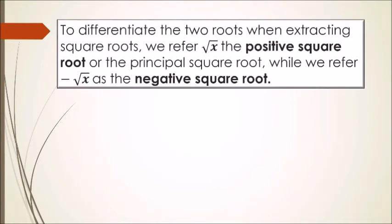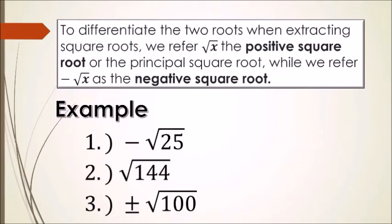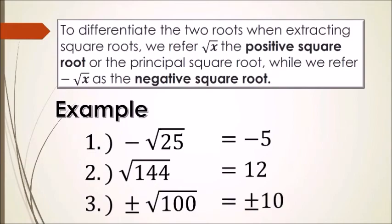To differentiate the two roots when extracting square roots: we refer to √x as the positive square root or the principal square root, while −√x is the negative square root. For example: the negative square root of 25 is −5; the positive square root of 144 is +12; and the positive and negative square root of 100 is ±10.